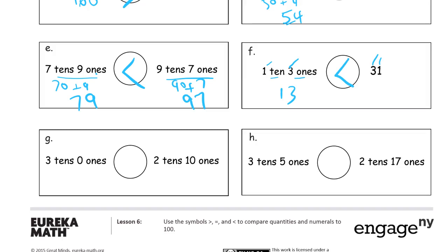And here we have 3 tens 0 ones, and 2 tens 10 ones. Now you may have started thinking, well, if it has more tens, it has to be greater, right? Well, but look at this. Figure out what the numbers really are first, too. 3 tens 0 ones, this is 30 plus 0, so that's just 30. 2 tens plus 10 ones. Well, 10 ones is another 10, so this is really 3 tens. These are actually equal.